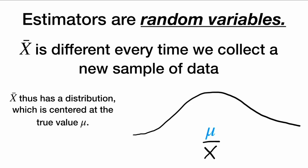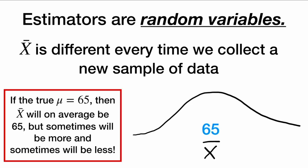That distribution is centered at the true value mu. So this is the distribution of our random variable x-bar, the sample mean, centered at mu. If the true mean mu is 65, that means x-bar will on average be 65, but sometimes will be a little bit more and sometimes a little bit less.